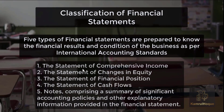Number one: the statement of comprehensive income, where all income and expenses are recorded. Number two: the statement of changes in equity, showing the condition of equity. Number three: the statement of financial position, showing the condition of assets and liabilities. Number four: the statement of cash flows, showing all cash inflows and outflows. Number five: notes, comprising a summary of significant accounting policies and other explanatory information provided in the financial statements.